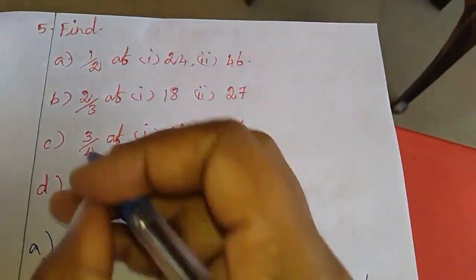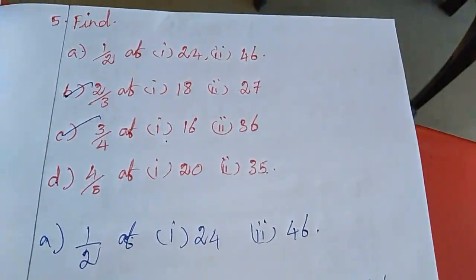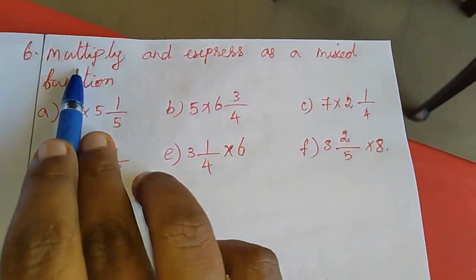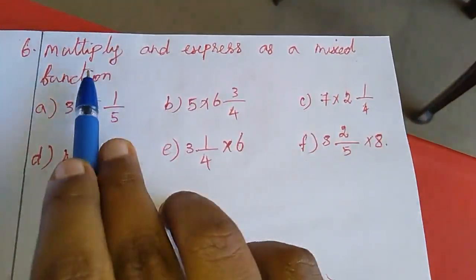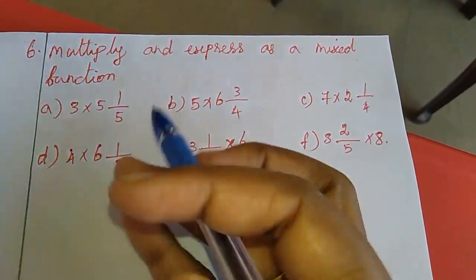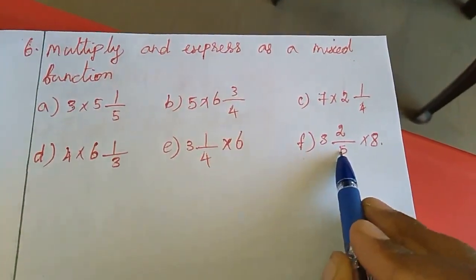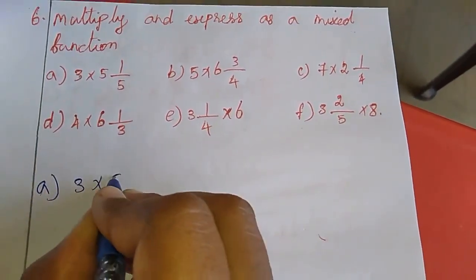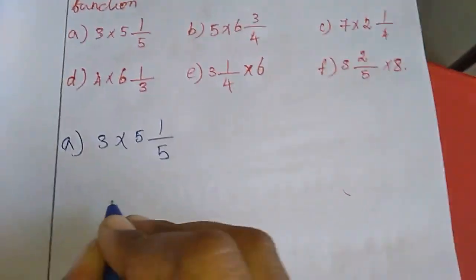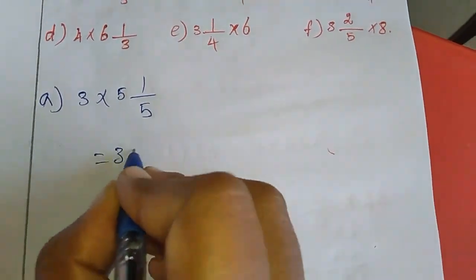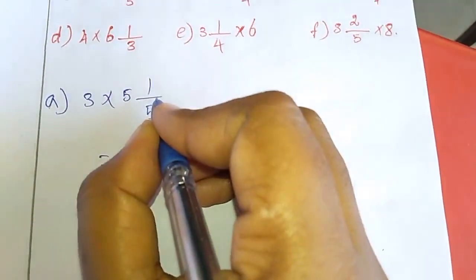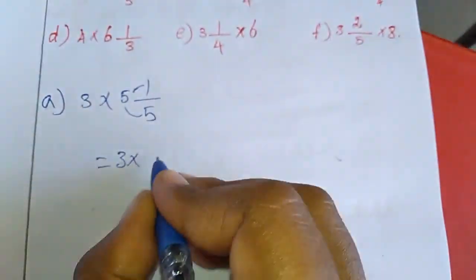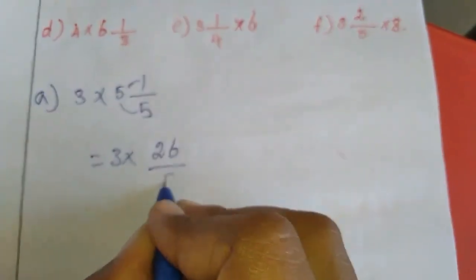The balance b and c is homework for you. Now we will move to the sixth sum — multiply and express as a mixed fraction. In this also, I will do the first and last only; the balance you have to do. First sum A: 3 into 5 and 1 by 5. This first fraction I wrote as 3, and this mixed fraction I am going to convert as an improper fraction: 5 fives are 25, plus 1 is 26. So 26 divided by 5.